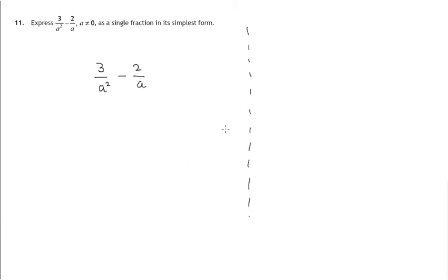Now to think about what we would do in a case like this, let's consider, suppose a was 5, suppose we had 3 over 5 squared, 25, minus 2 over 5. What would you do in a case like this?